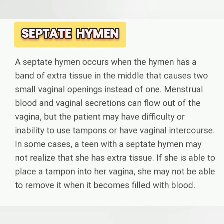Coming to the septate hymen: it divides the hymen with extra tissue in the middle, causing two small vaginal openings instead of one. Menstrual blood and vaginal secretions can flow out of the vagina, but the patient may face difficulty using tampons or having vaginal intercourse.